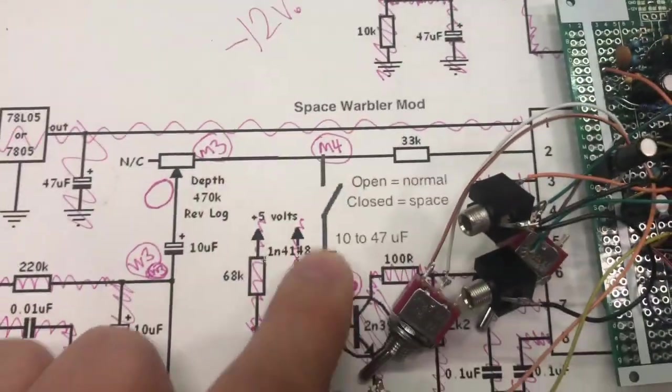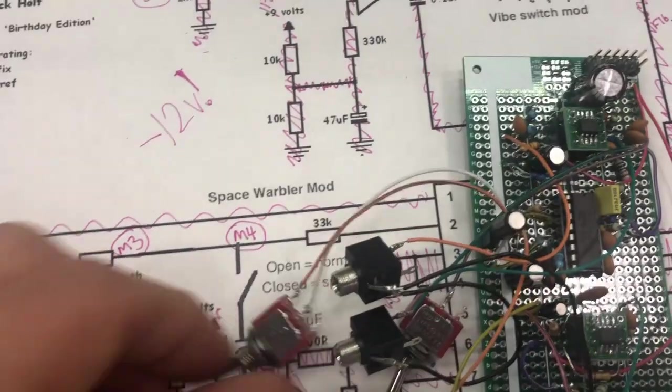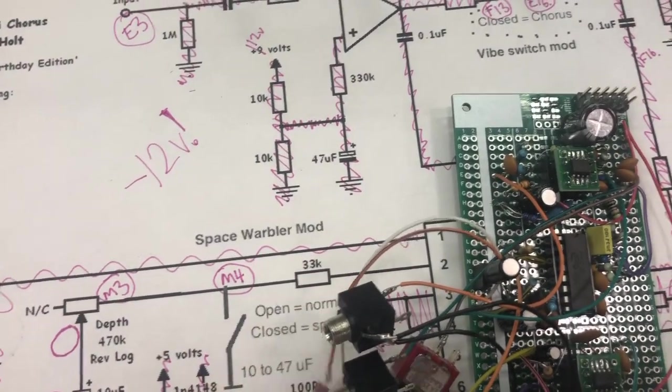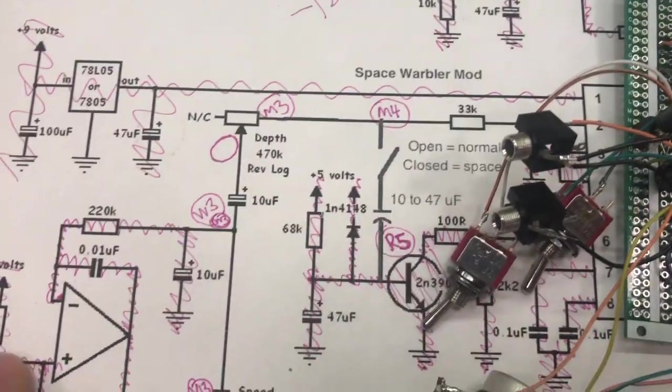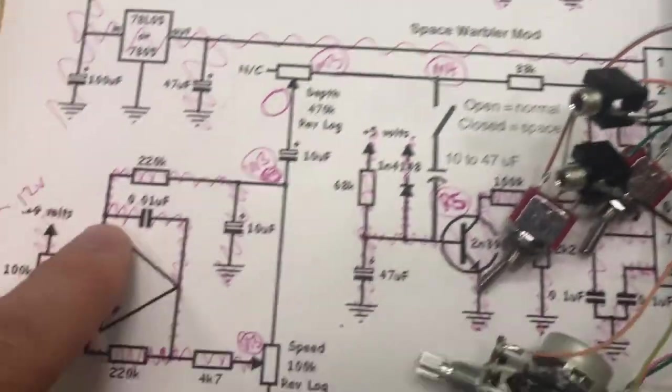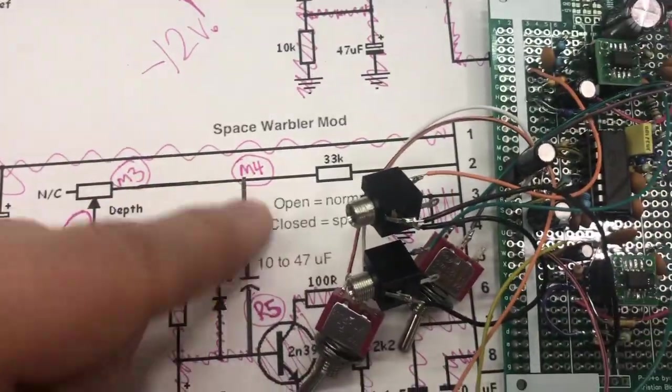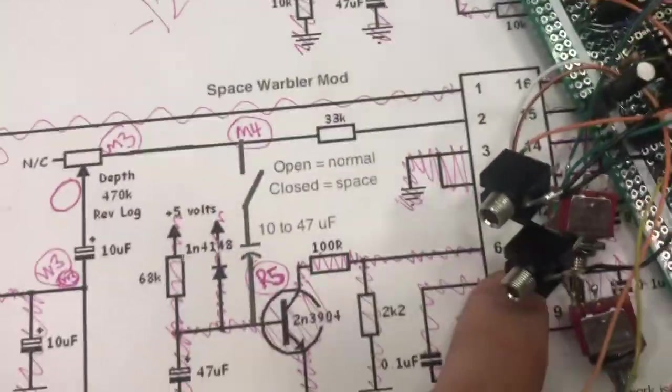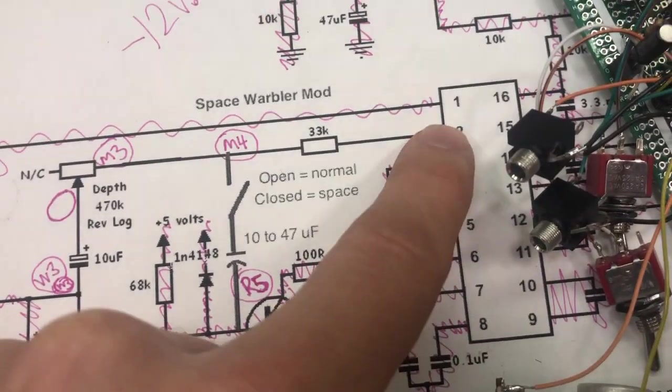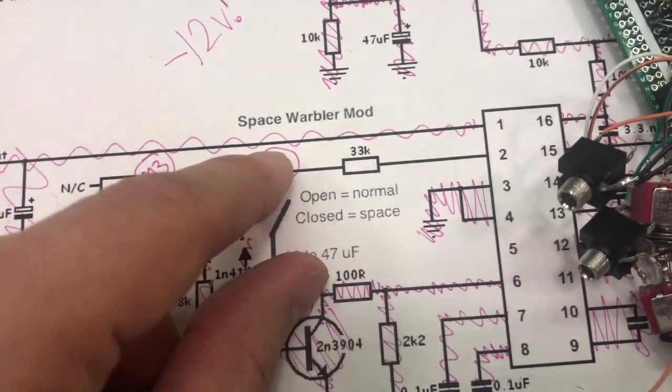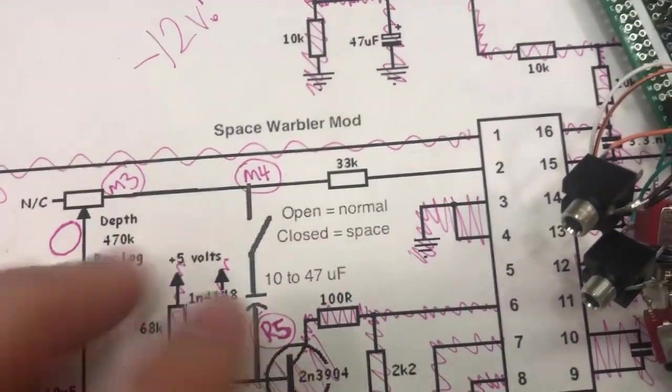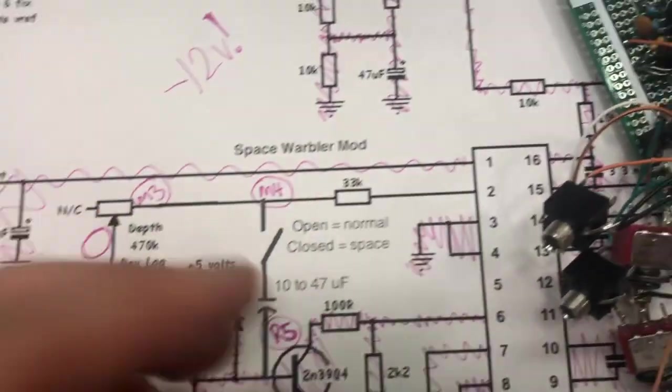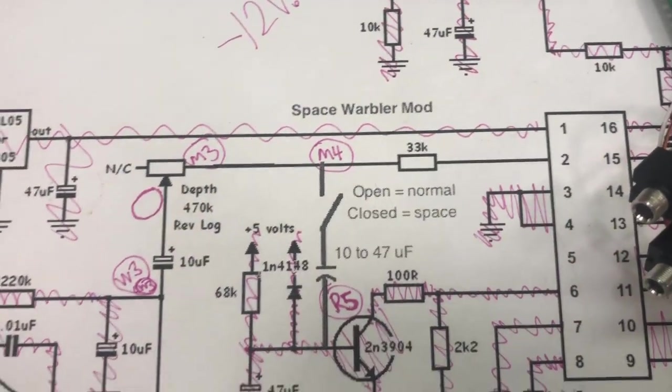This space warble mod takes the oscillator and adds that also into pin 6 instead of only into pin 7, so you get a space warble effect. You'll hear that in a minute as well.